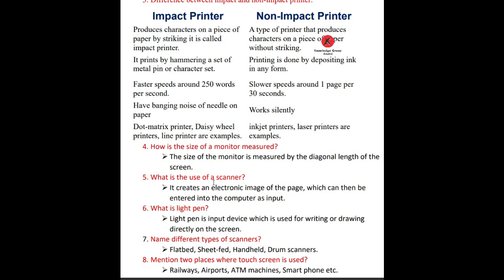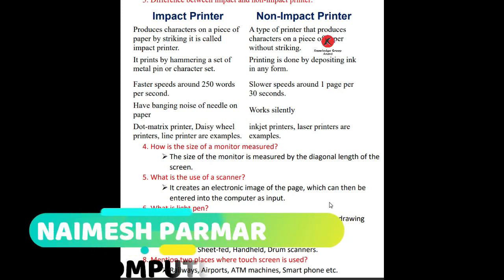What is the use of a scanner? It creates an electronic image of a page which can then be entered into the computer as input. What is a light pen? A light pen is an input device used for writing or drawing directly on the screen. Name different types of scanners: flatbed scanner, sheet-fed scanner, handheld scanner, and drum scanner. Mention two places where touch screens are used: railways, airports, ATM machines, and smartphones. Students, please write down this exercise in your notebook. Thank you, bye.